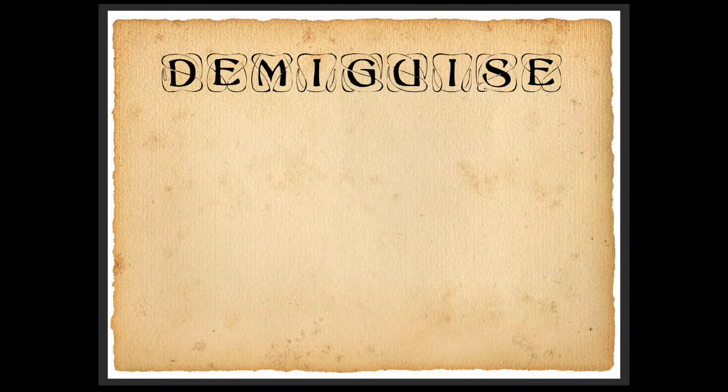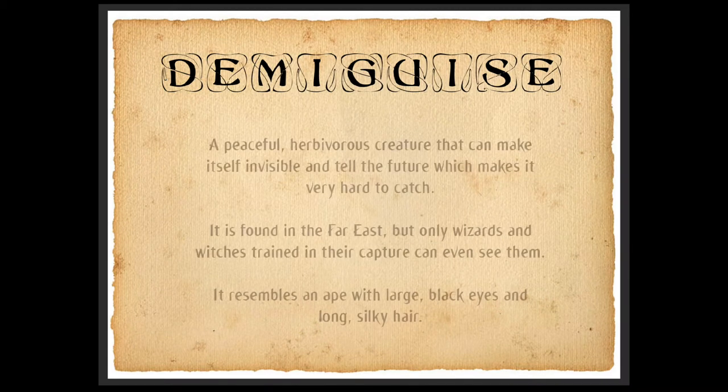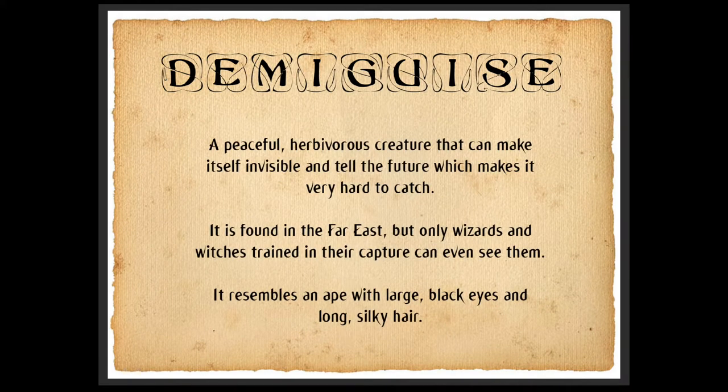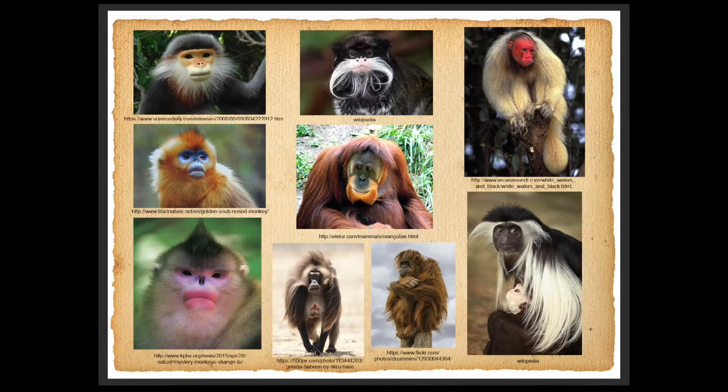The next character I want to talk about is one of my favorites — the Demiguise, a peaceful herbivorous creature that can make itself invisible and tell the future, which makes it very hard to catch. It is found in the Far East, but only wizards and witches trained in their capture can even see them. It resembles an ape with large black eyes and long, silky hair.